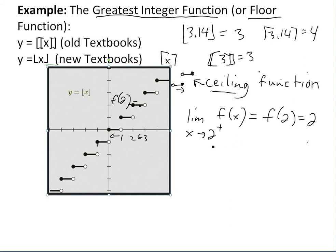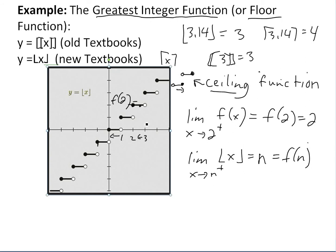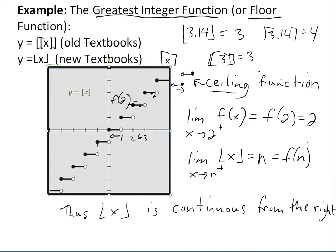So it is defined and continuous there. More generally, the limit as x approaches any integer n from the right of the greatest integer function of x equals n, which equals f(n). Even for a non-integer like 3.14, approaching from the right gives 3.14 itself. Thus the greatest integer or floor function is continuous from the right.